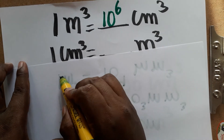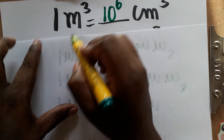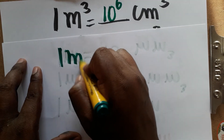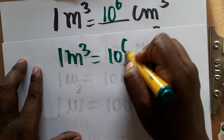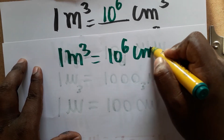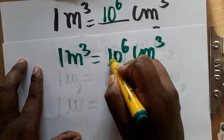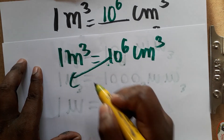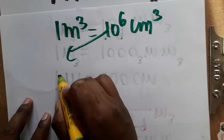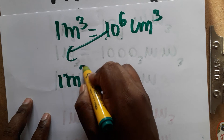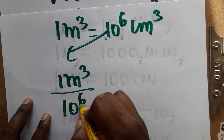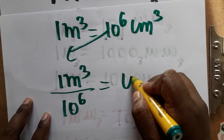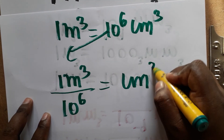Taking the value: one meter cube is equal to 10 power 6 centimeter cube. Bringing the 10 power 6 to the denominator: one meter cube divided by 10 power 6 is equal to one centimeter cube.